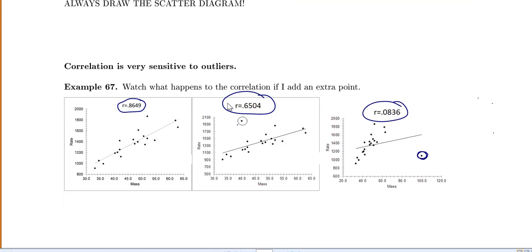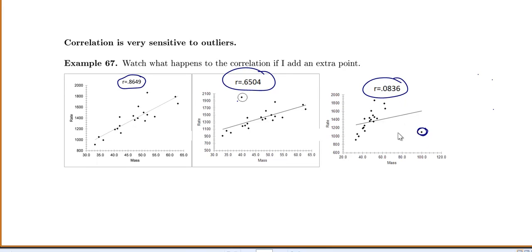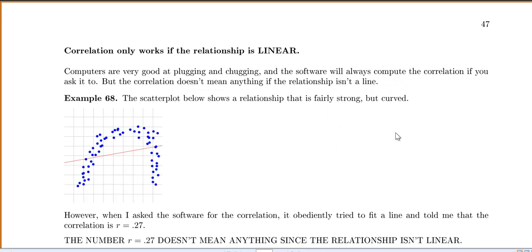And so your outliers can very much affect your correlation. And we mentioned that correlation only works if our relationship is linear.